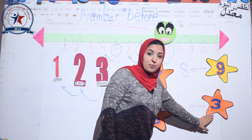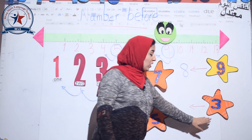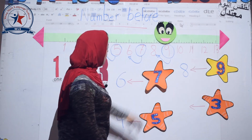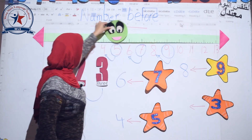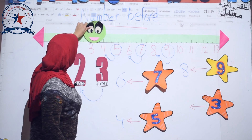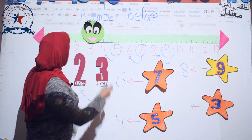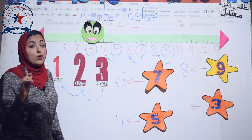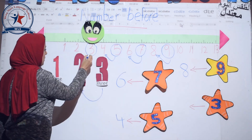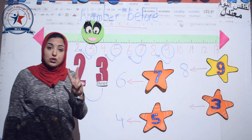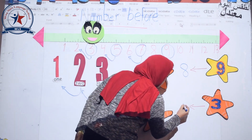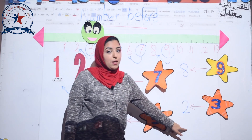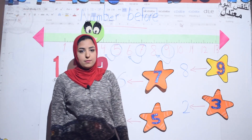Now, what is this number? Three. Mr. Number Line, where is number three? Let's go. Circle it. And what's before three? Number two. So before number three, number two. Thank you.